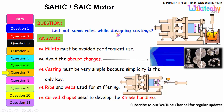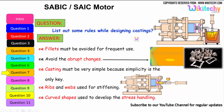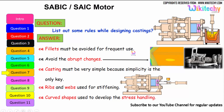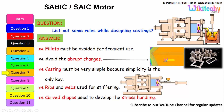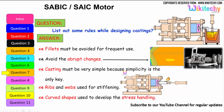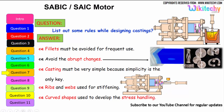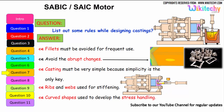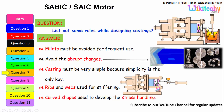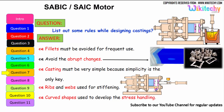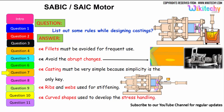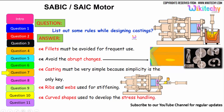Let us see some rules while designing castings. Fillets must be avoided for frequent use. Avoid abrupt changes in section. Castings must be kept very simple — simplicity is the only key. Ribs are used for stiffening, so ribs should be incorporated. Curved shapes should be used to manage stress handling. These are the rules we have to follow for castings.